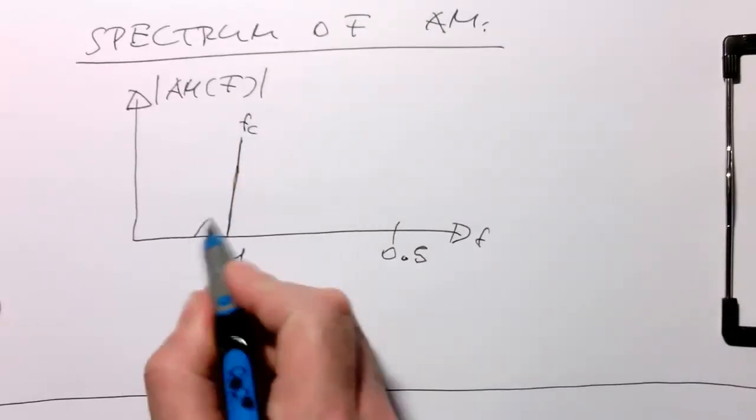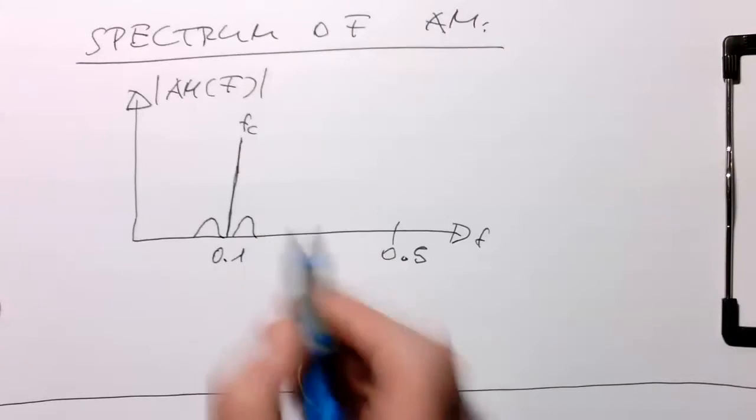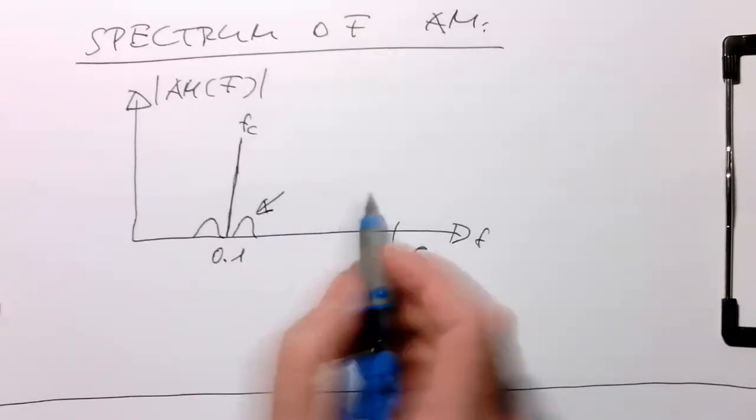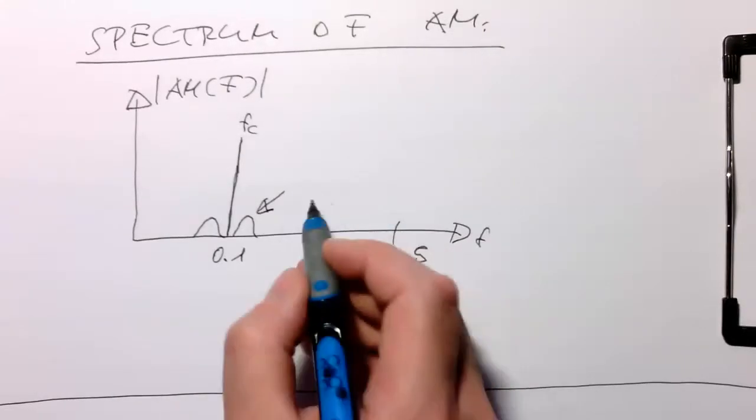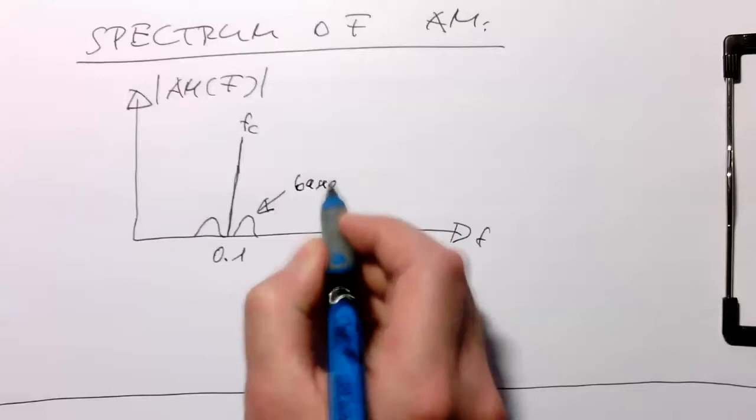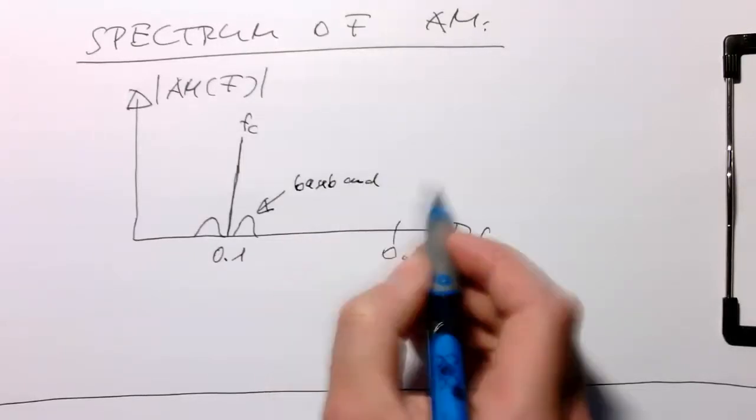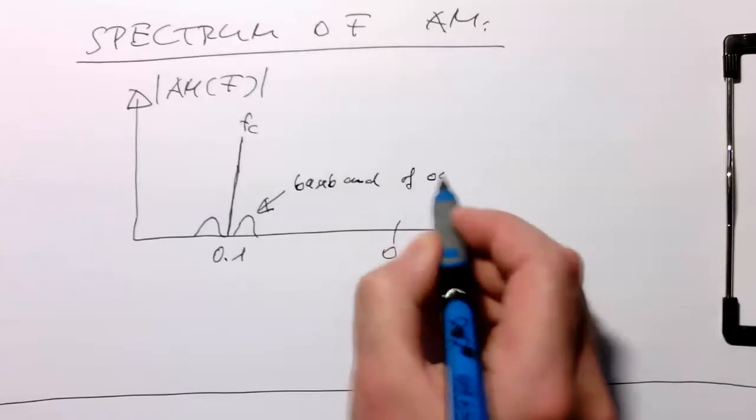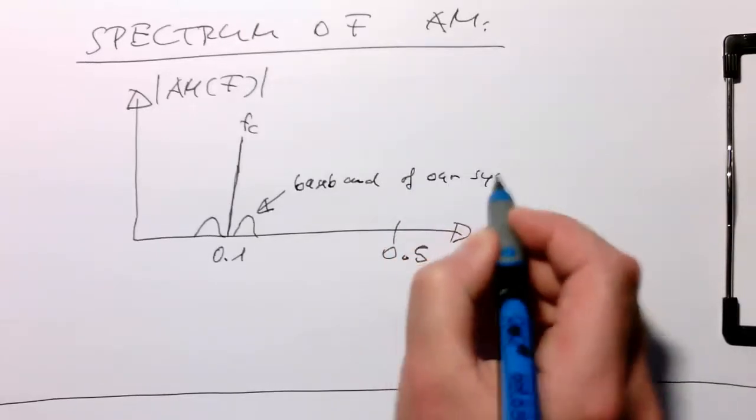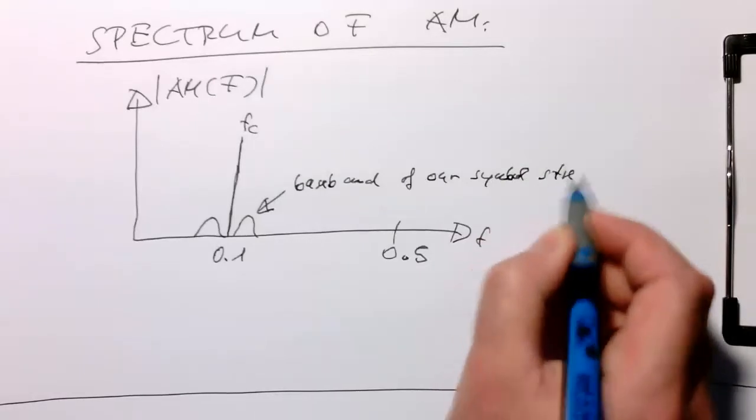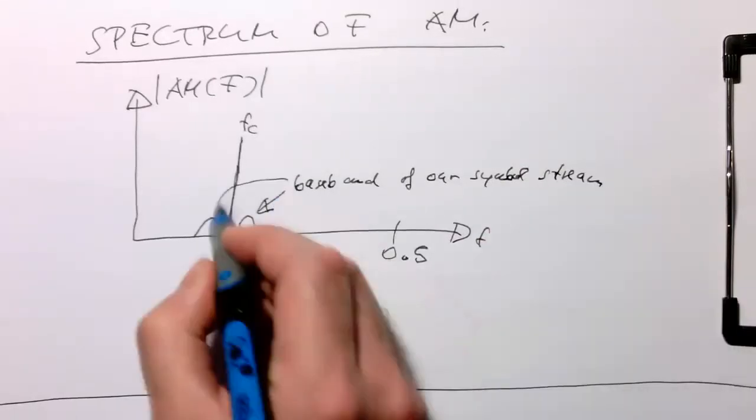And then we've got here on the side, these sidebands. So they are generated, they're just created from the baseband, baseband of our symbol stream. And this also shows up on that side.